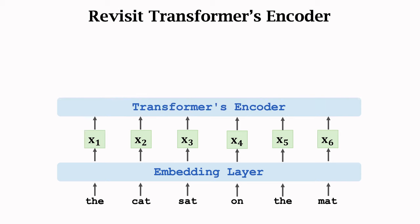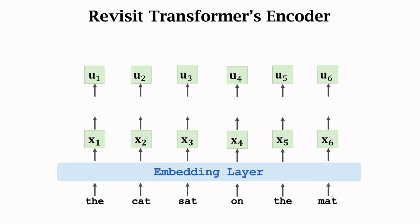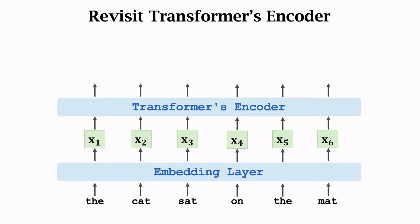Then the transformer's encoder network outputs a sequence of vectors, u1 to u6. The encoder network is made of many blocks. Each block has a self-attention layer and a dense layer. The length of the output sequence is the same as the input sequence. If the input sentence has 6 words, then the output sequence has 6 vectors.